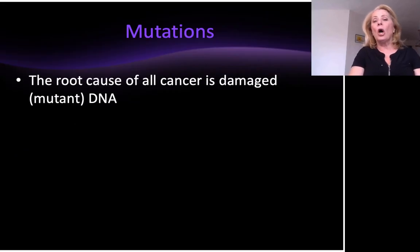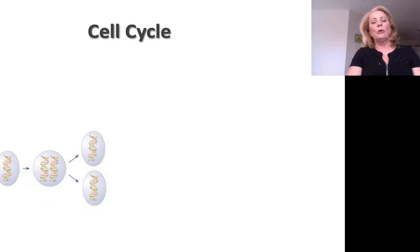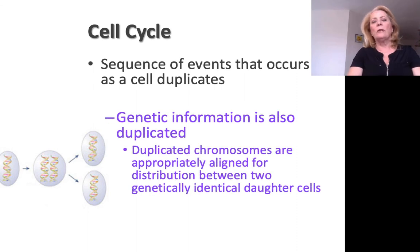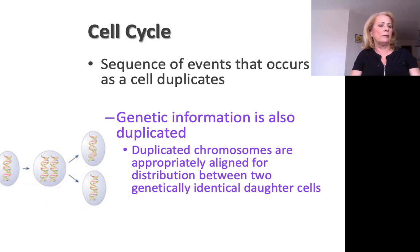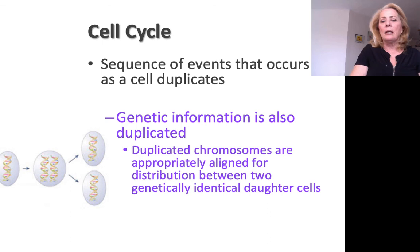Mutations are the cause of cancer, due to damage to the DNA. The cell cycle isn't working appropriately, and certain things go wrong that create mutations. The cell cycle is a very particular step-by-step process where the cell is not only dividing, but all of the information inside the cell has to divide too — including organelles. The goal is making two genetically identical daughter cells.